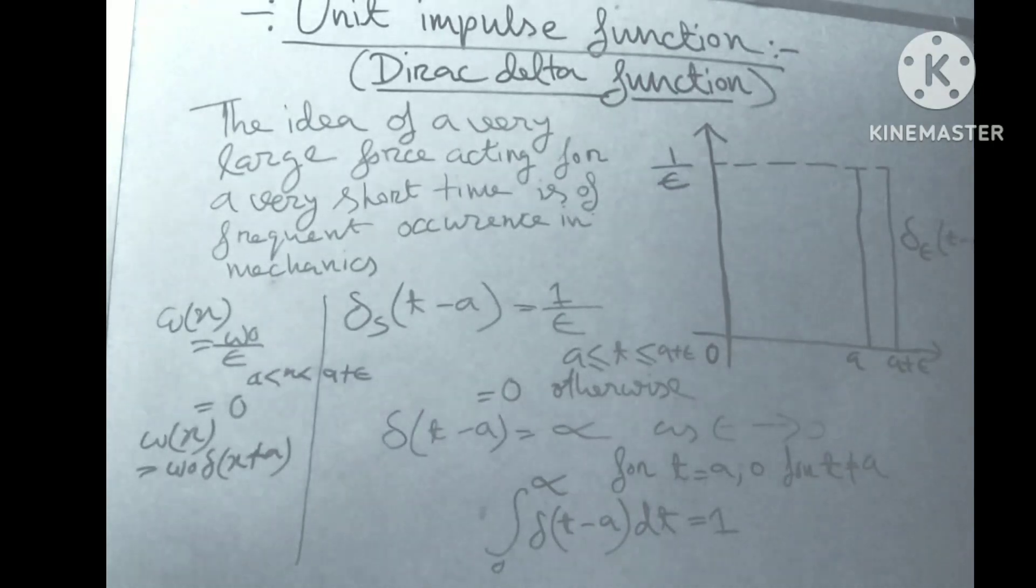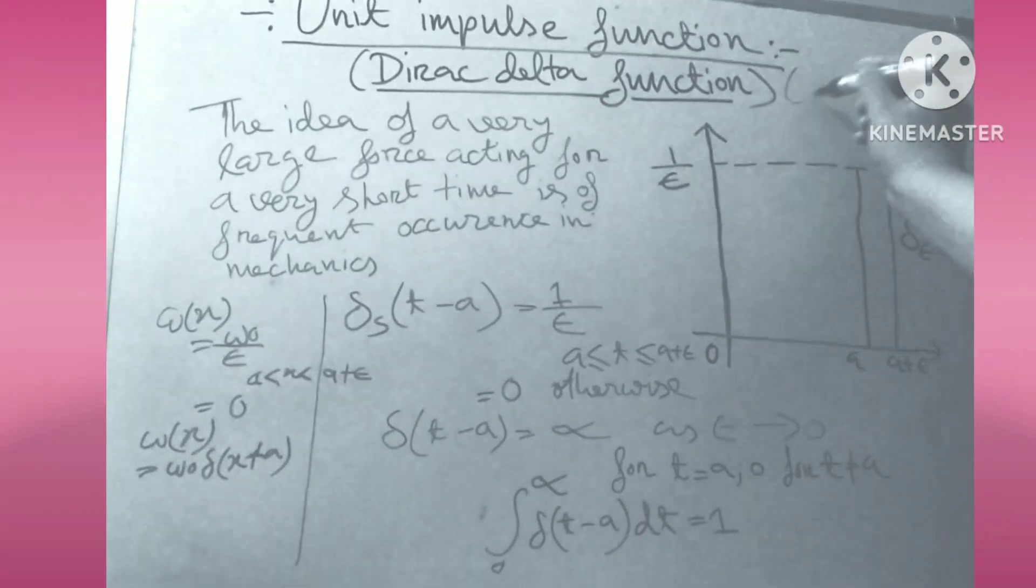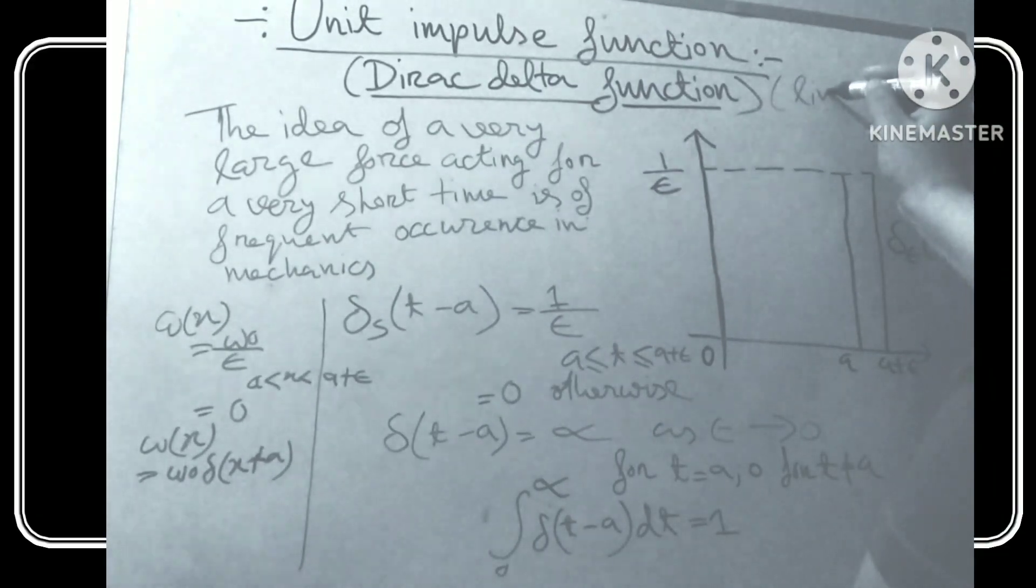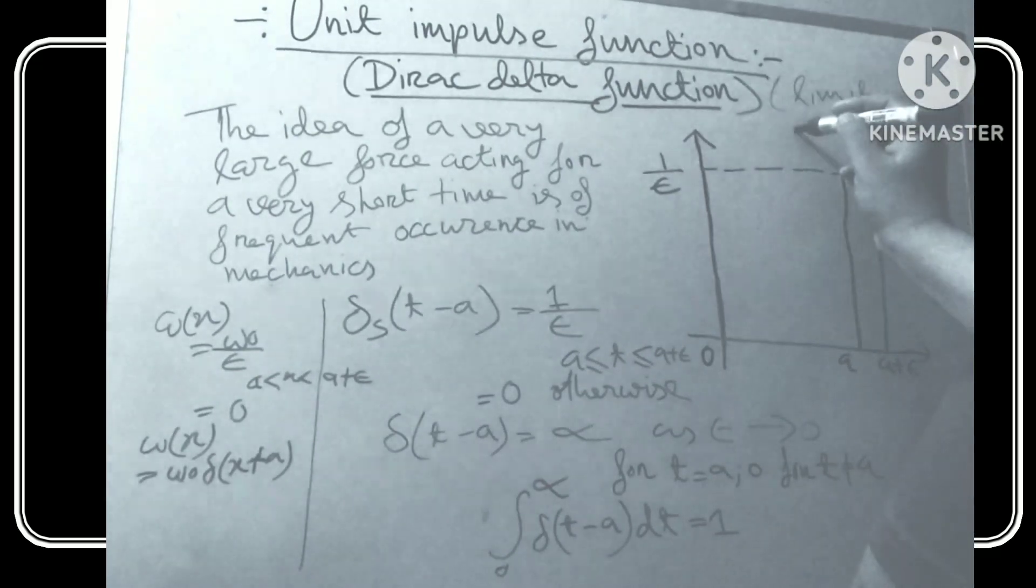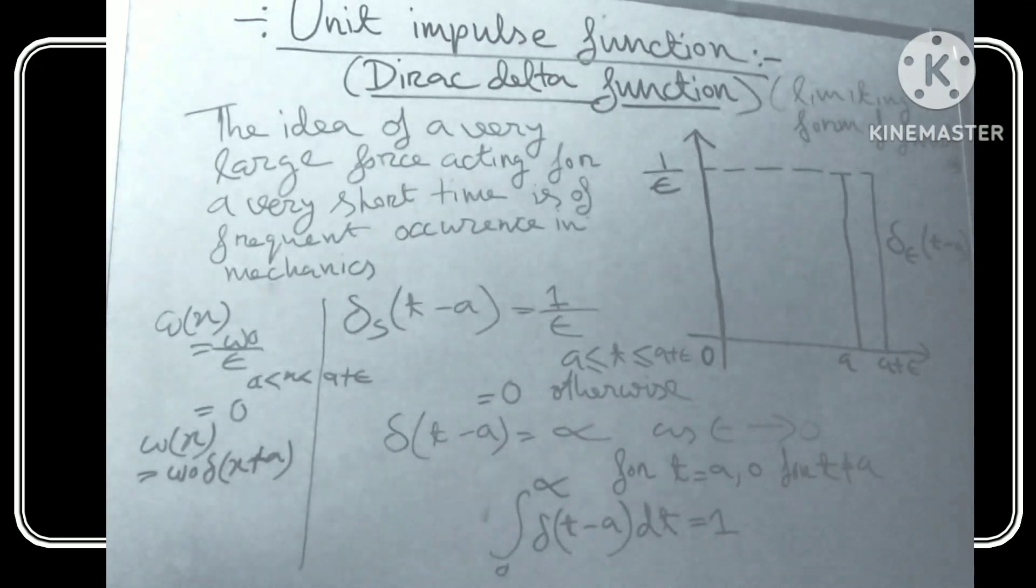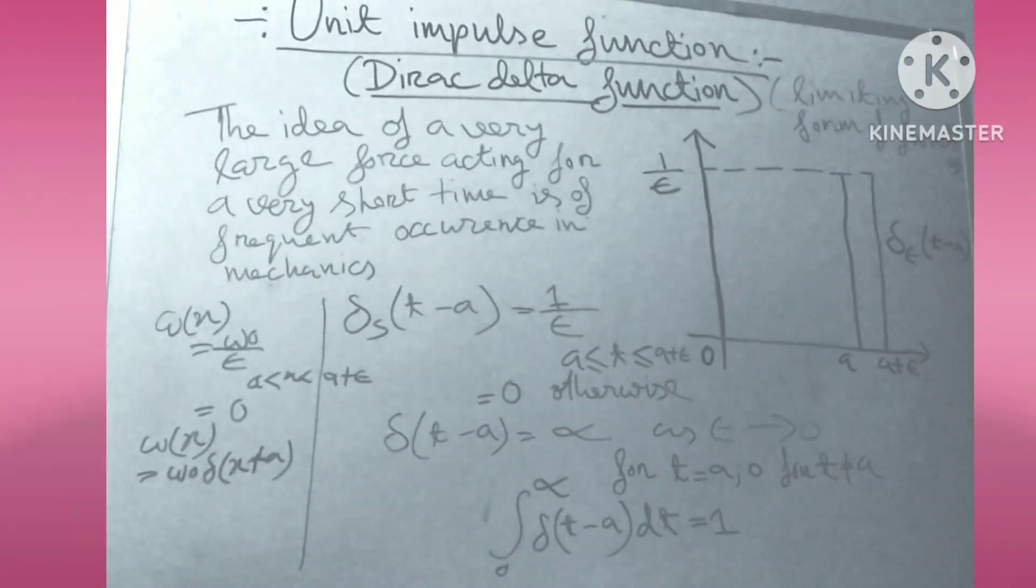It is called as the limiting form of function. Thus, unit impulse function is considered as limiting form of function and del is t minus a.